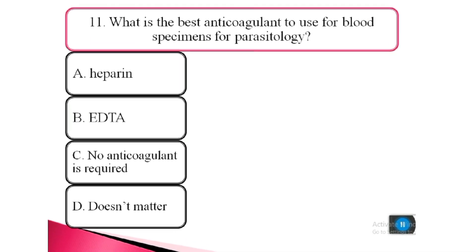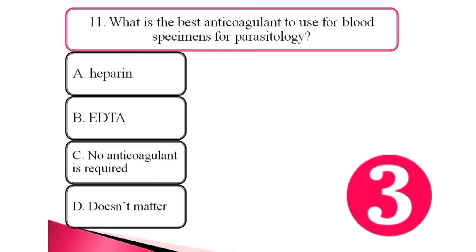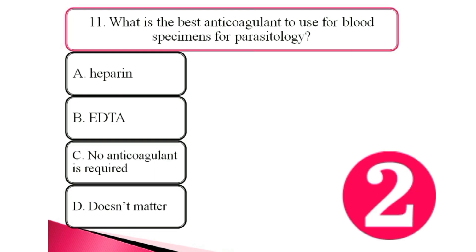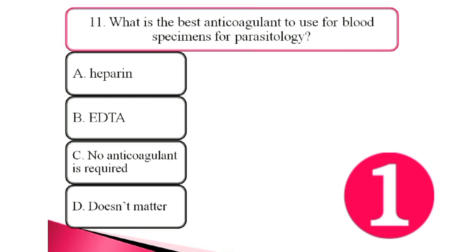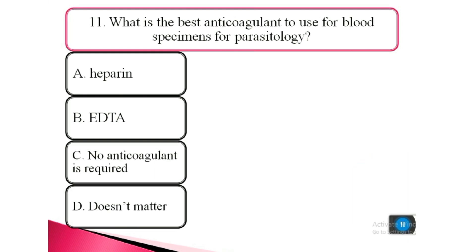Question 11. What is the best anticoagulant used for blood specimens for parasitology? a. heparin, b. EDTA, c. no anticoagulant is required, d. doesn't matter. The answer is b. EDTA.